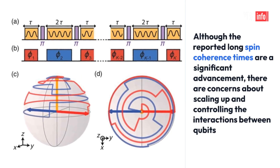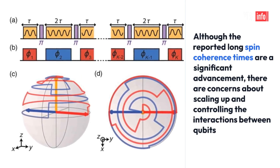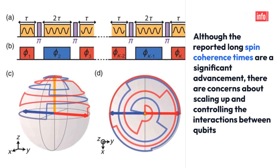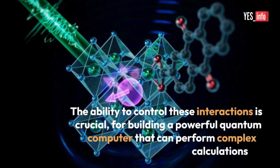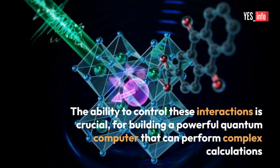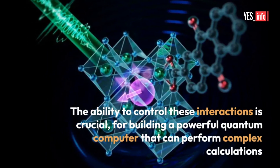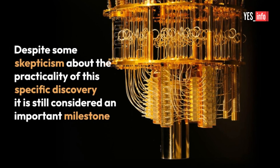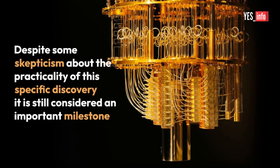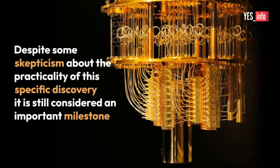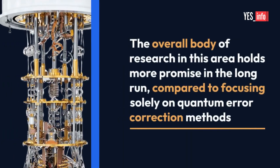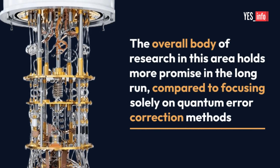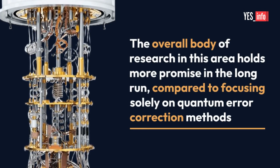Although the reported long-spin coherence times are a significant advancement, there are concerns about scaling up and controlling the interactions between qubits. The ability to control these interactions is crucial for building a powerful quantum computer that can perform complex calculations. Despite some skepticism about the practicality of this specific discovery, it is still considered an important milestone. The overall body of research in this area holds more promise in the long run, compared to focusing solely on quantum error correction methods.